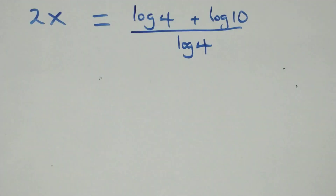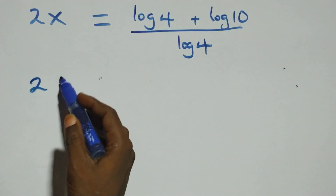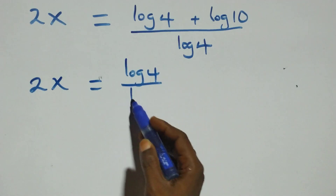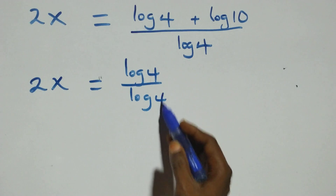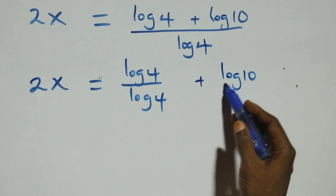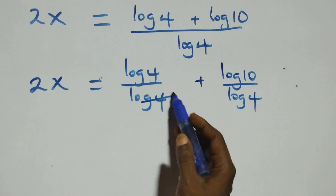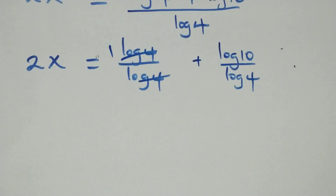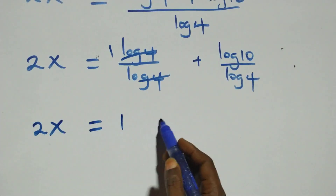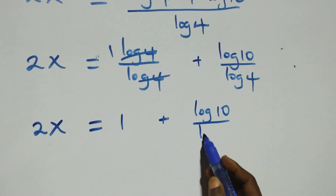Next step here, we separate this into two fractions, and we have 2x equals log 4 over log 4 plus log 10 over log 4. Then log 4 over log 4 cancels to give 1, so this becomes 2x equals 1 plus log 10 over log 4.